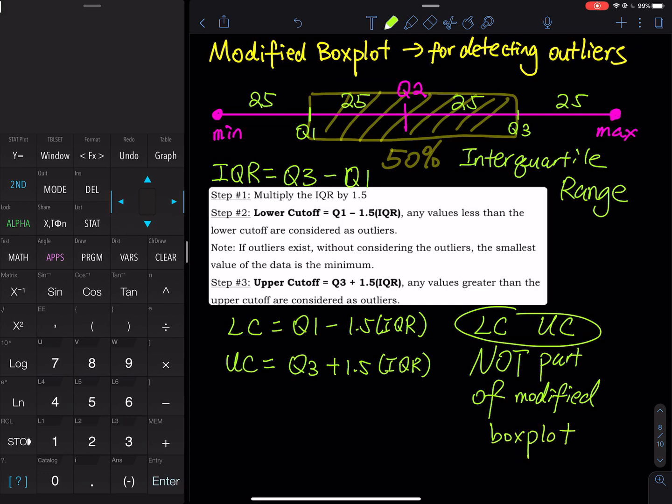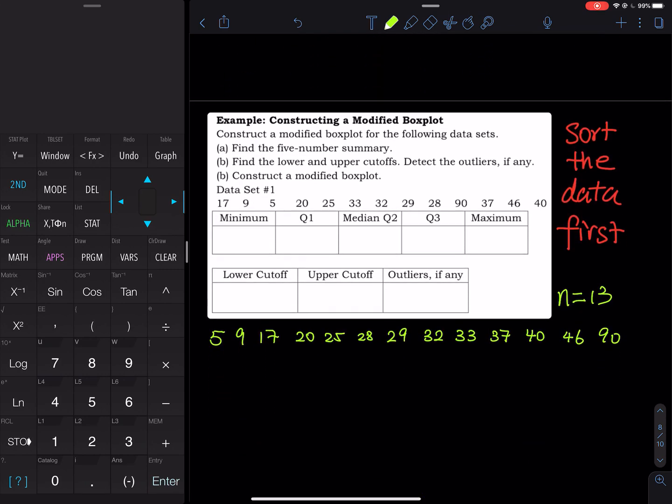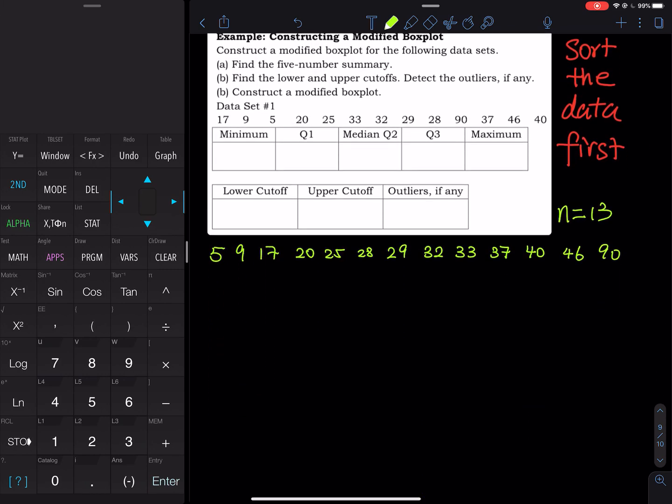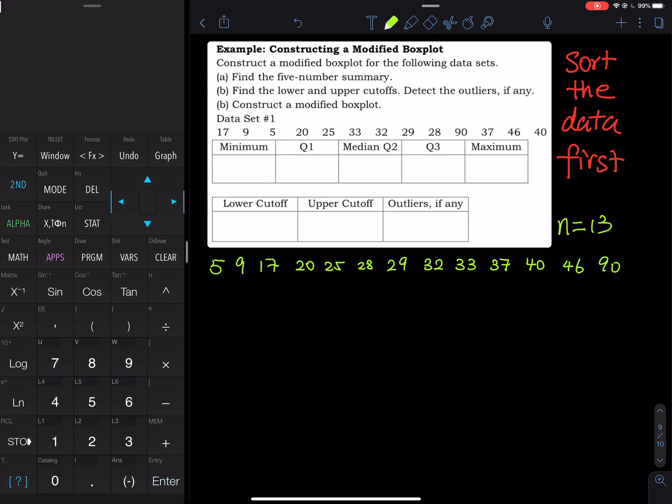And then let's do an actual problem. So we are going to try this actual problem. It's a data set that we used in the previous video. So we use this data set to construct a regular boxplot. Now we are going to construct a modified boxplot to detect any outliers. First, we find the five number summary. So we have 13 entries.